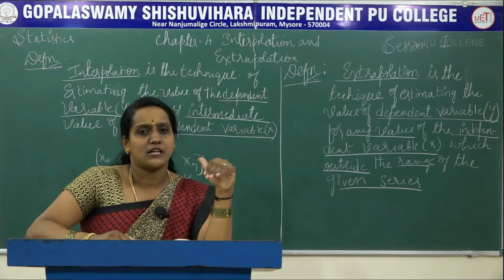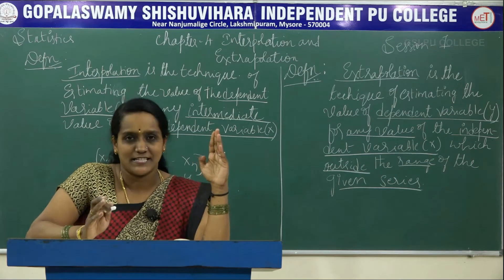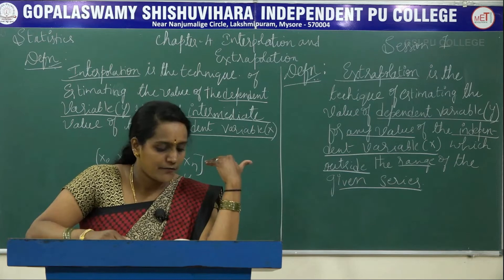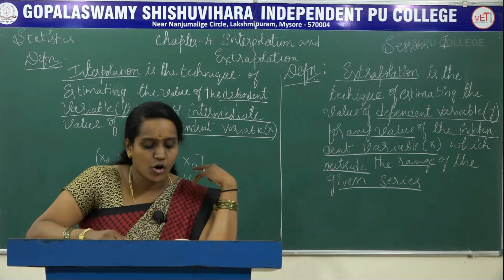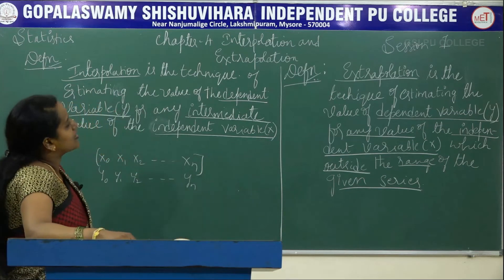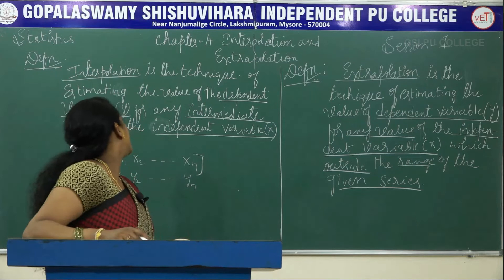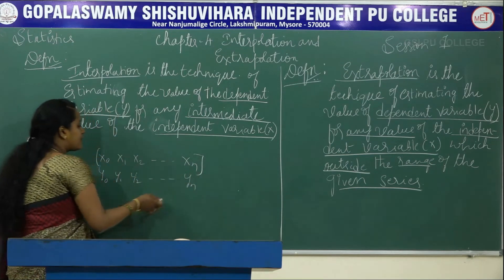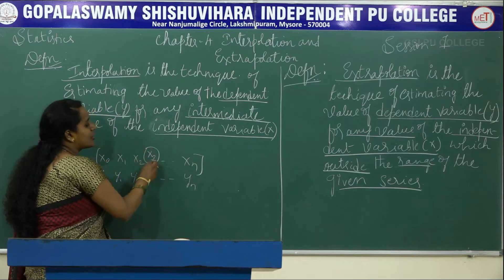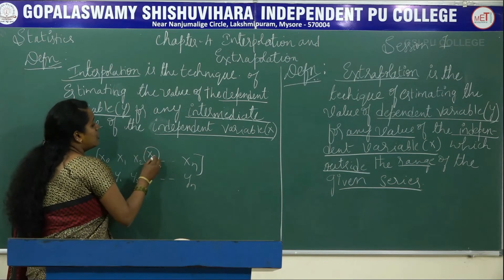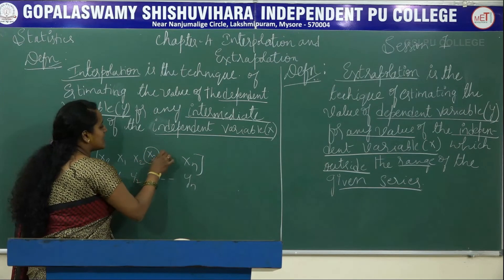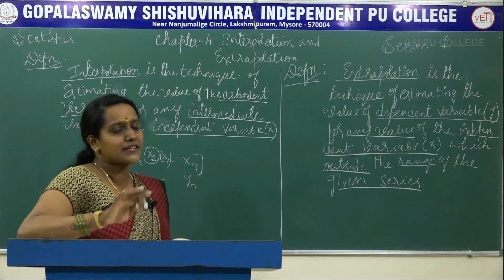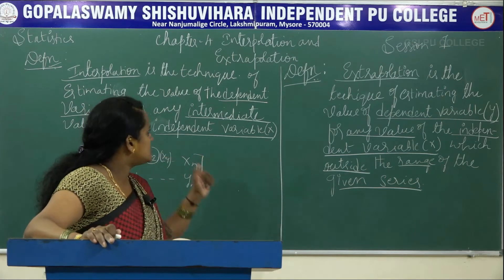If the independent variable rises, the dependent variable will also rise; if it decreases, the dependent variable also decreases. This uniformity between the variables is essential. The third assumption is: there will be no consecutive missing values in the series. We can calculate one missing value — for example, if X3 is unknown — but if both X3 and X4 are missing consecutively, we cannot calculate them. These are strict assumptions for Interpolation and Extrapolation.